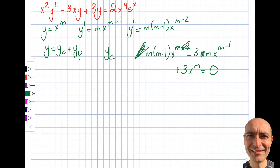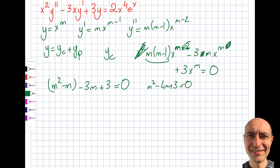After substituting and factoring out x^m we get m² - m - 3m + 3 = 0, which simplifies to m² - 4m + 3 = 0. Using the quadratic formula, the roots are m₁ = 1 and m₂ = 3.